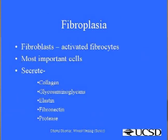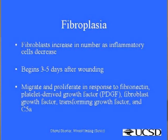Fibroplasia — the main cells running this event are the fibroblasts. Fibroblasts are activated fibrocytes. They migrate from the edges of the wound and secrete almost all the content of the wound matrix, including collagen, glycosaminoglycans, elastin, fibronectin, and protease. The activity of fibroblasts increases as inflammation decreases, which is around the third day.